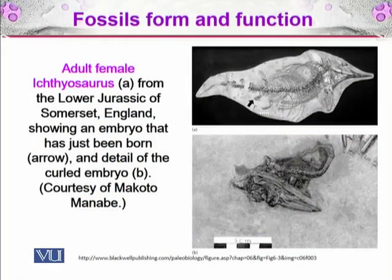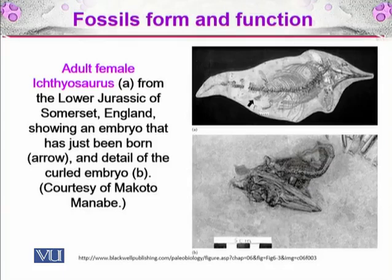A diagram is shown of an adult female ichthyosaur from the Lower Jurassic of Somerset, England, showing an embryo that was present in its body when it died. You can see both the embryo and the adult female — the larger diagram B shows detail of the curled embryo. Comparing the two fossils — one of an embryo and one of an adult — you can observe the different forms and structures and compare proportions in terms of allometry.